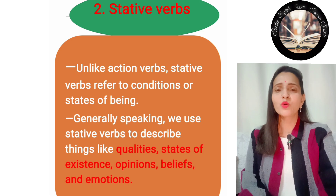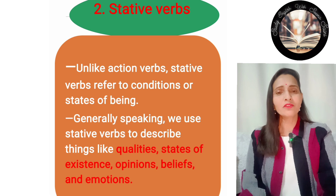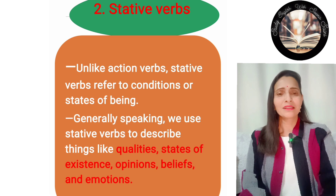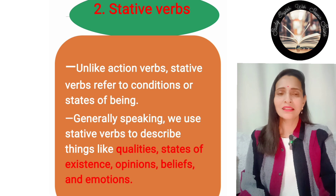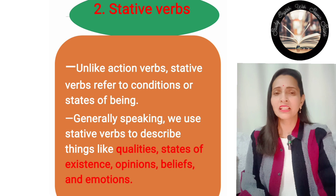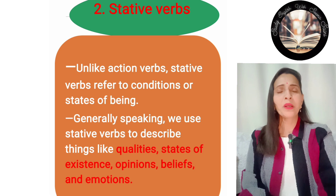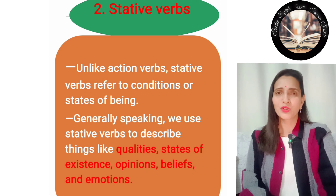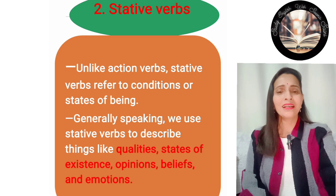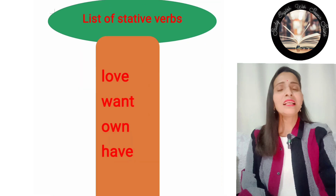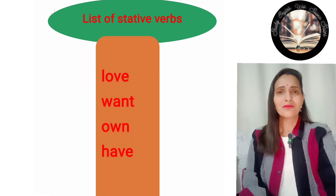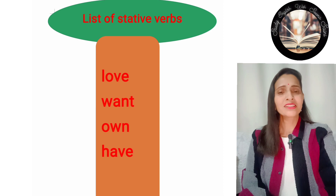Generally speaking, we use stative verbs to describe things like qualities, states of existence, opinions, beliefs, and emotions. List of stative verbs: love, want, own, have, etc.